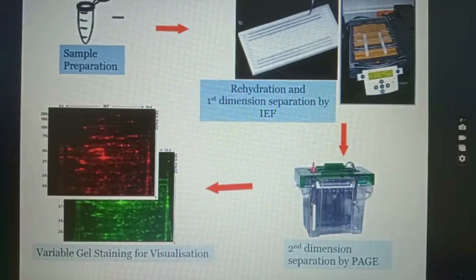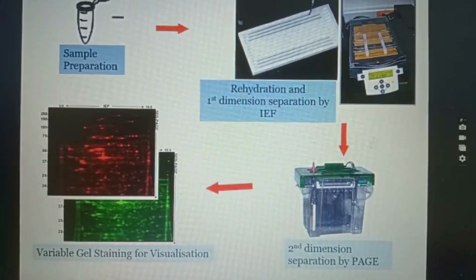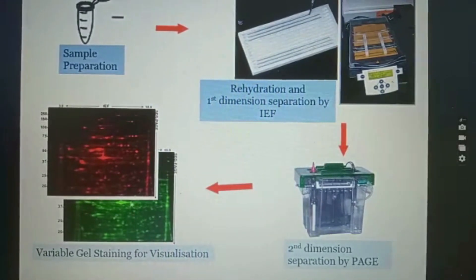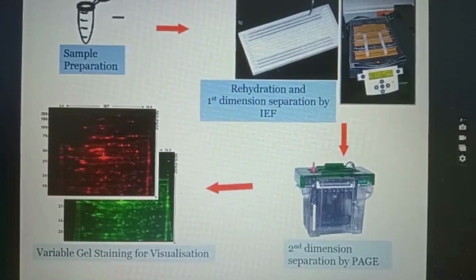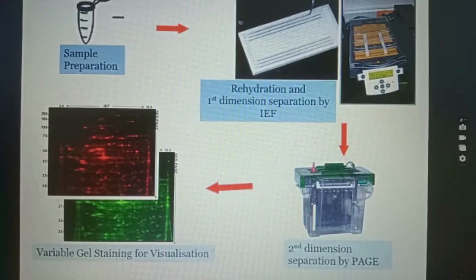Considering both isoelectric focusing and polyacrylamide gel electrophoresis, the protein extract is separated based on both pH and molecular mass. The polyacrylamide gel is then stained to visualize protein spots. Several available staining methods include Coomassie brilliant blue, silver nitrate, and fluorescent staining.